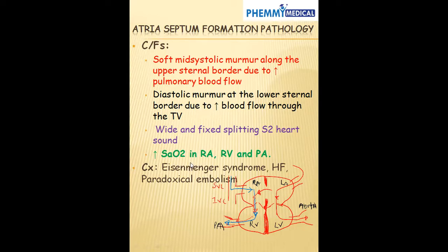What are the complications of ASD? One of the complications is Eisenmenger syndrome. These are the clinical findings we see in the patient when left to right shunt becomes right to left shunt. Normally in patients with ASD, blood shunts from the left to the right, increasing the volume of blood in the right atrium, right ventricle, and through the pulmonary artery. The pulmonary artery undergoes adaptation — smooth muscle hyperplasia or hypertrophy — causing narrowing of the pulmonary artery.